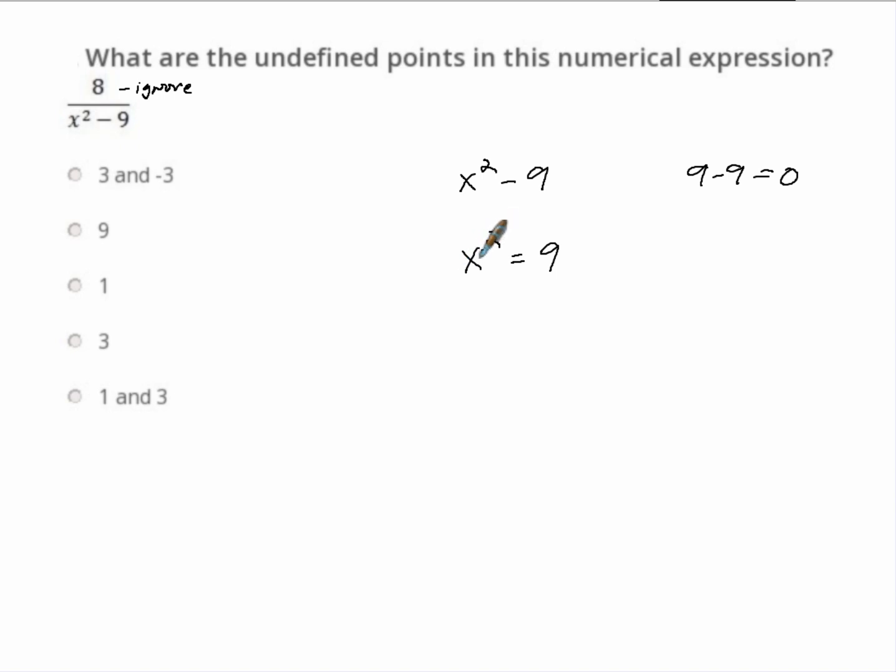Well what are the two different ways or what are the ways we can do this? So we can take the square root of both sides that cancels this out and x is equal to the square root of 9.